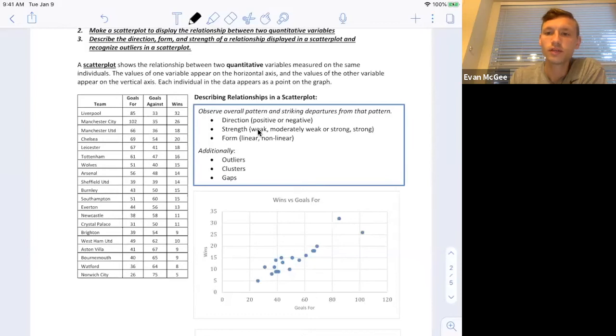Strength. We really have four options for strength right now. Is it weak? Is it moderately weak? Is it moderately strong or is it strong? In this case, I would say this is a pretty strong relationship because they are tightly clustered together. We'll learn more about that soon.